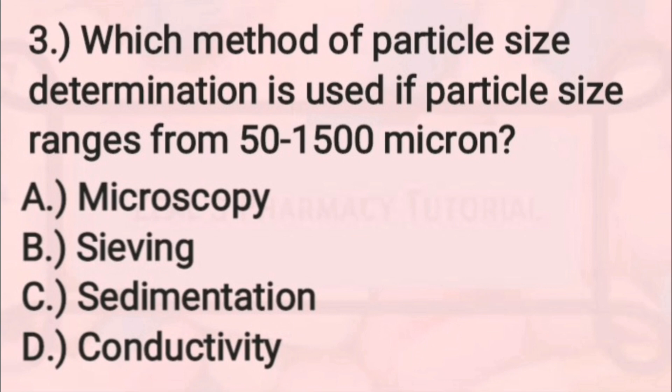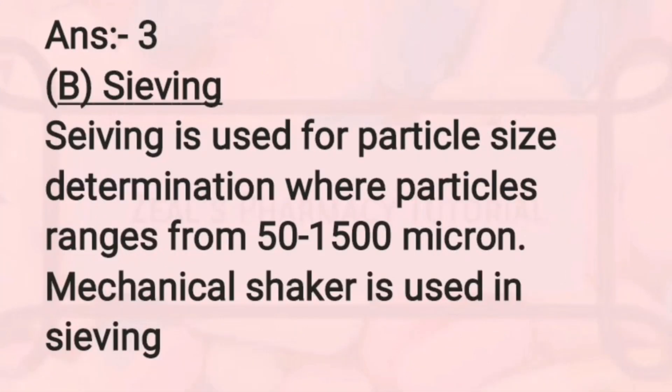The third question is: which method of particle size determination is used if particle size ranges from 50 to 1500 microns — microscopy, sieving, sedimentation, or conductivity? The correct answer is sieving. Sieving is used for particle size determination where particle size ranges from 50 to 1500 microns, and a mechanical shaker is used in sieving.